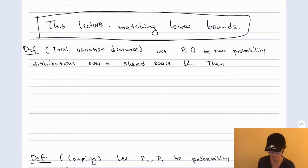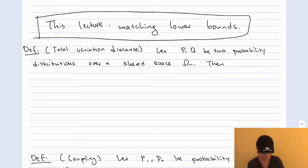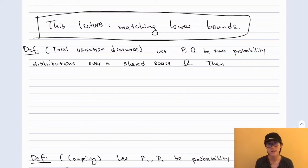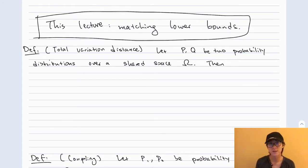This will seem like a little bit of a digression at first, but I promise you it is very closely related to the problem of learning with outliers. The first important statistical notion we will introduce is total variation distance, which is a classical notion of distance between probability distributions, and is very closely related to learning with outliers.